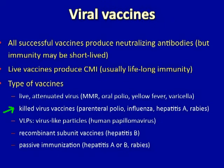Examples of killed virus vaccines include parenteral polio vaccine, the annual influenza vaccine, hepatitis A, and rabies. Some artificial viral-like particles have been used for immunization — in the past, the hepatitis B vaccine was composed of viral-like particles, and currently a human papillomavirus vaccine is of this type. The hepatitis B vaccine is now produced from a cloned gene for the hepatitis B surface antigen. Passive immunization can also be used for some viruses and is routinely used after exposure to hepatitis A, hepatitis B, or rabies when these exposures are known to have occurred.